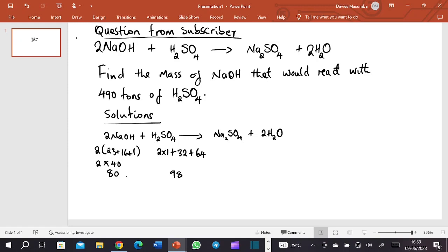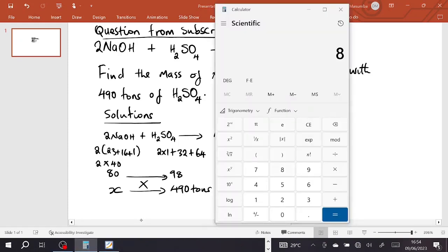Now in the equation if you are given 490 tons, you need to find the mass of sodium on this side, so you put x. If we were to cross multiply then we'll say x times 98 will be like 98x which will be equal to 80 times 490. So it will be 39,200, right?